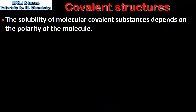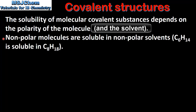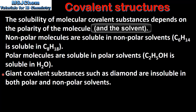Next we look at the solubility and electrical conductivity of the two types of substances. The solubility of molecular covalent substances depends on the polarity of the molecule. Nonpolar molecules are soluble in nonpolar solvents — for example, hexane is soluble in octane, and both are nonpolar molecules. Polar molecules are soluble in polar solvents — for example, ethanol is soluble in water. Giant covalent substances such as diamond are insoluble in both polar and nonpolar solvents, due to the strong covalent bonds between the atoms.